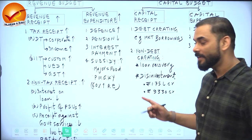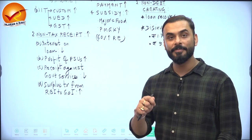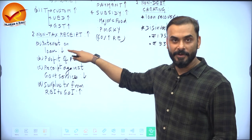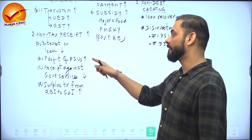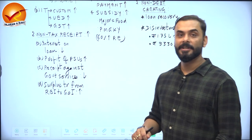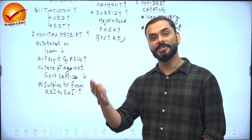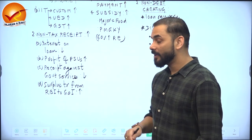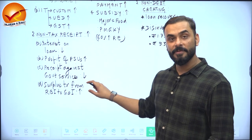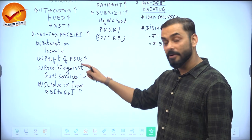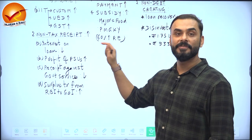For non-tax receipts, the first component is interest on loans given by the government, which came down. The profit of public sector units started going up once economic revival began after the lockdown. Income from services the government provides like health and education came down. However, the Reserve Bank of India's surplus transferred to the government increased. Overall, the non-tax revenue of the government of India was decent last year due to the RBI surplus transfer and PSU profits.